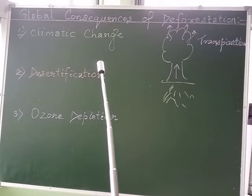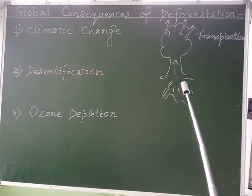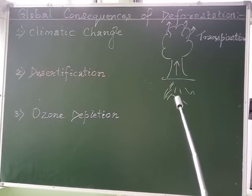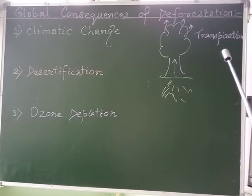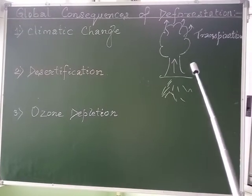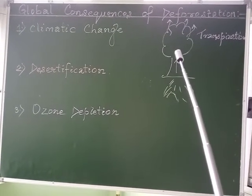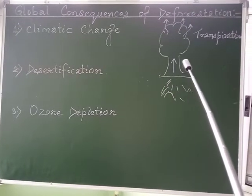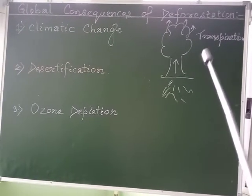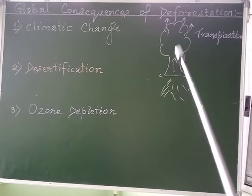The first consequence is climatic change. As we know, the green plants not only hold the soil particles together but they also prevent soil erosion, and they help to absorb water and minerals from the soil and perform the process of transpiration. So they play an important role in the recycling of the water cycle, and also help in forming clouds. So if trees are cut or removed, transpiration would be minimized and the water cycle may become imbalanced.